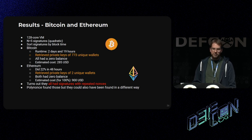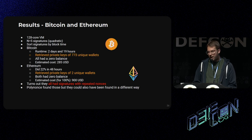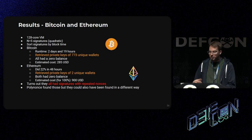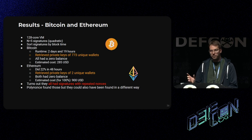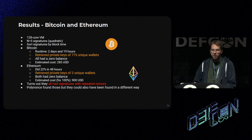These two also had a zero balance. It turns out that all of the signatures generated by these vulnerable wallets actually had repeated nonces. The Polynonce attack is also going to find repeated nonces, because that's just a particular case of an LCG where the last unknown coefficient is the only non-zero one, equal to that repeated nonce value. But this could also have been found with a simpler attack.